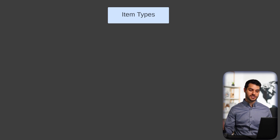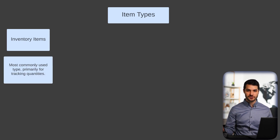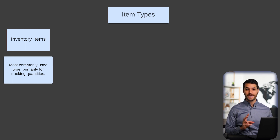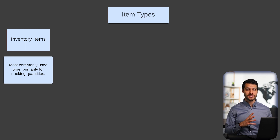The first one is inventory items — that's the most generic item type that most companies are going to deal with. For example, if you're getting a widget from vendors and you're then reselling that widget, that can be logged as an inventory item type. Inventory items are used for tracking quantities and values. You can also have things like lot numbering and serializing for inventory items.